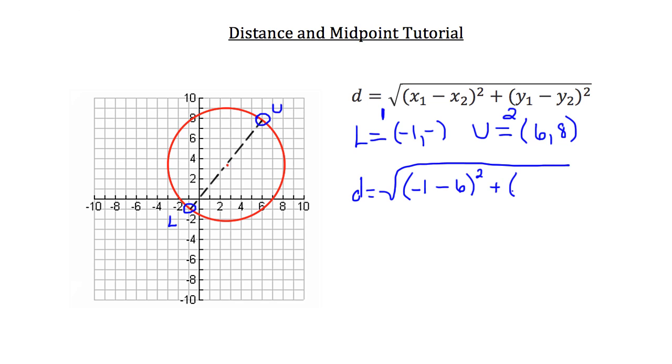plus the y coordinate of point 1, which is negative 1, minus the y coordinate of point 2, which is 8, quantity squared.